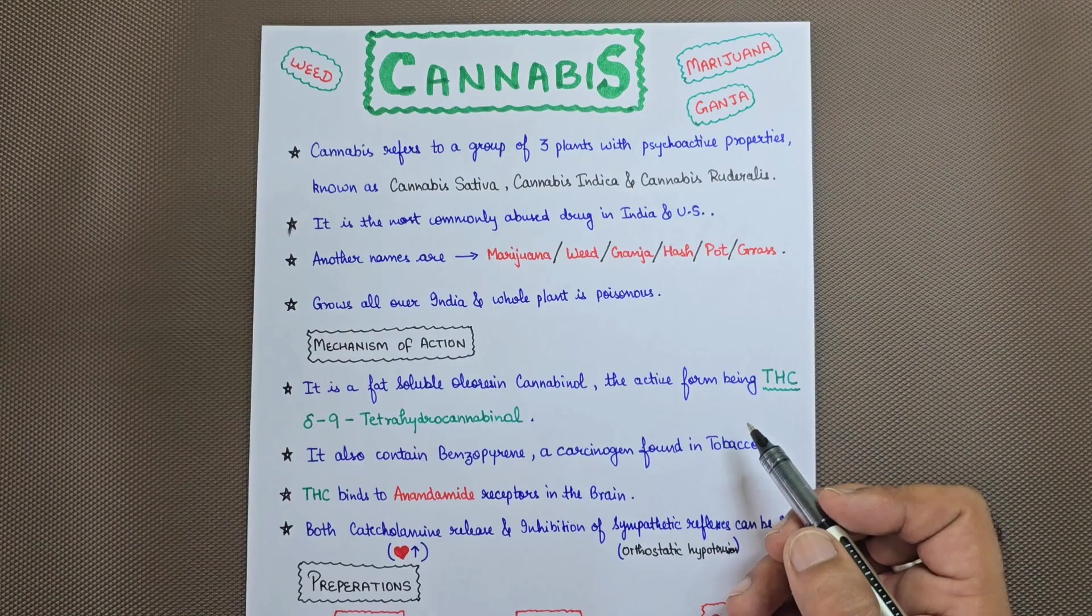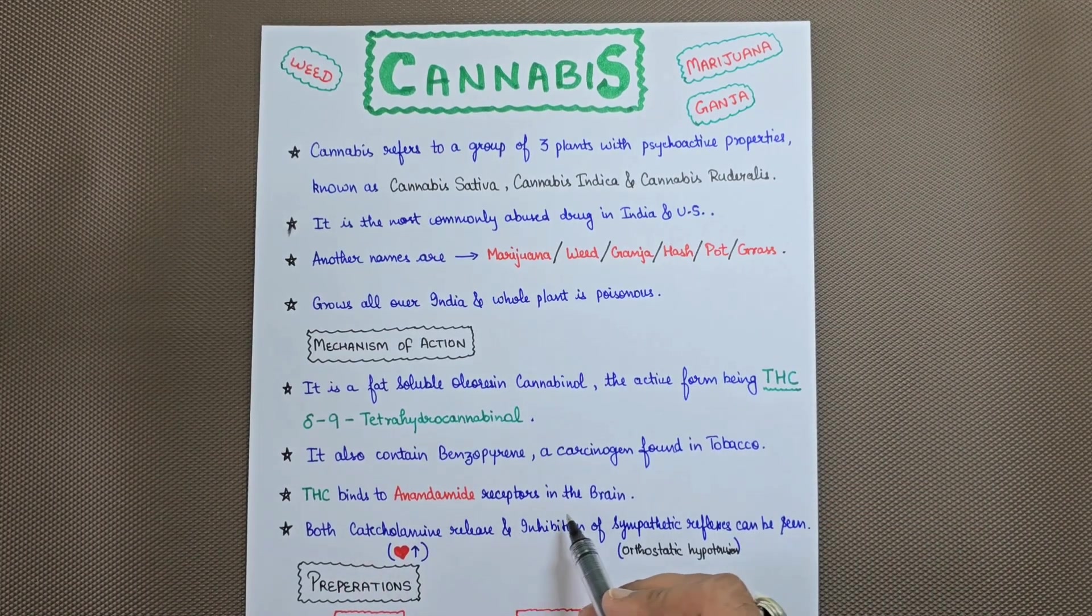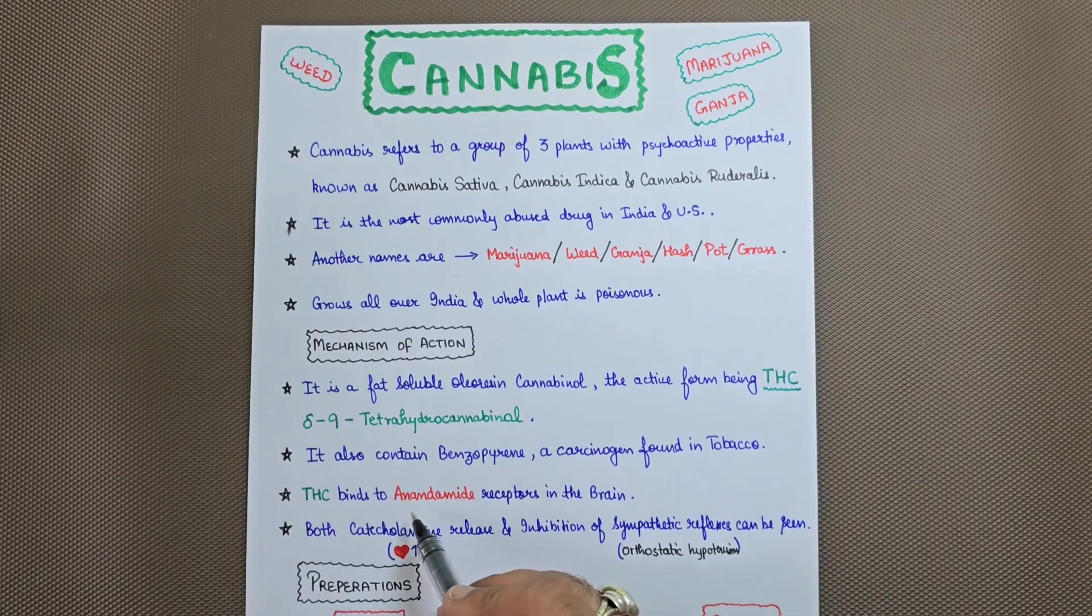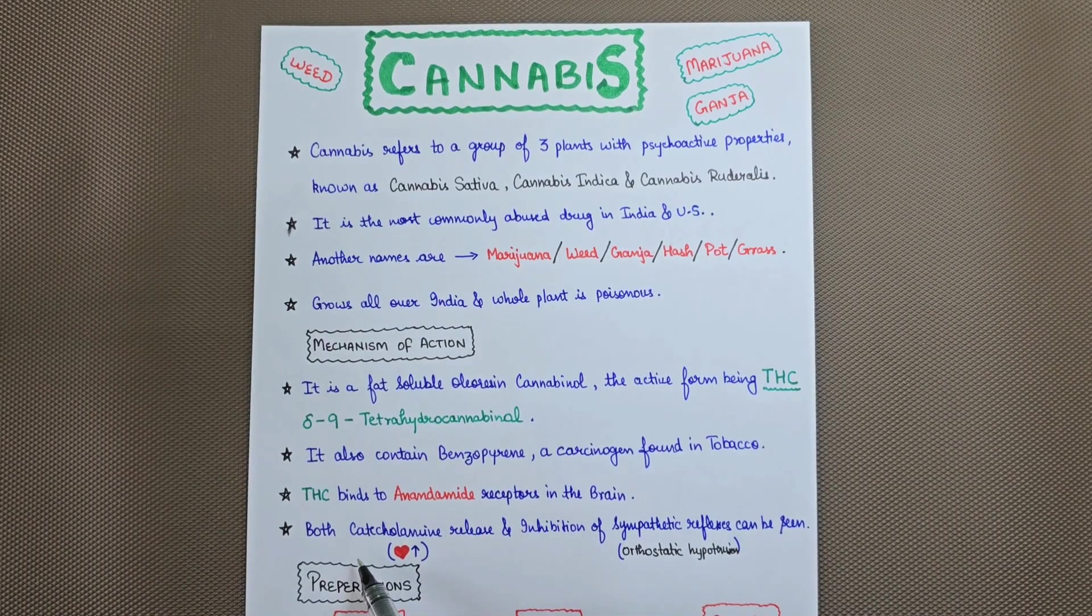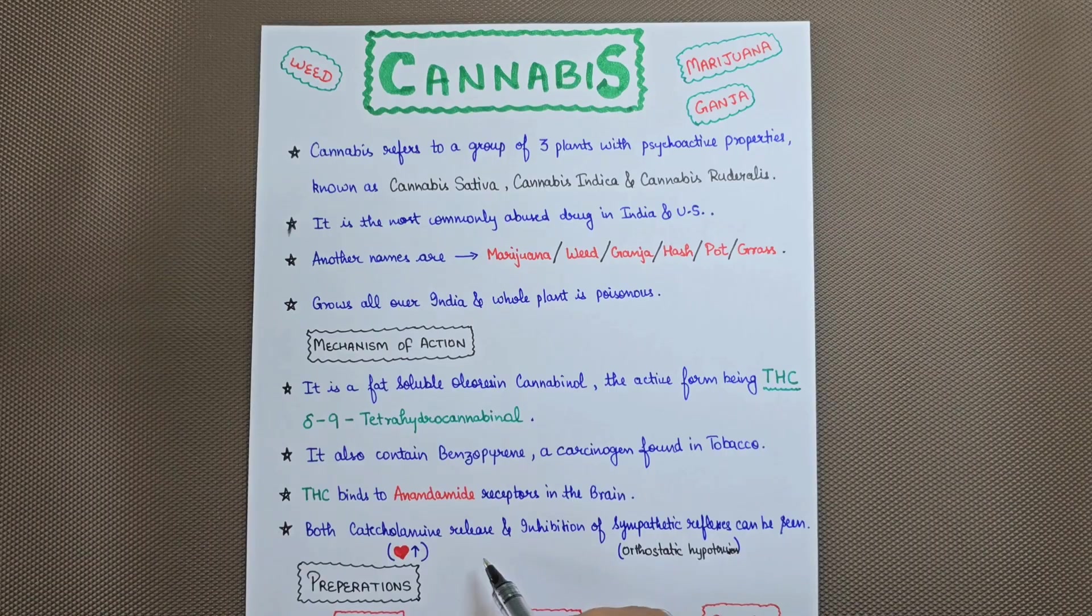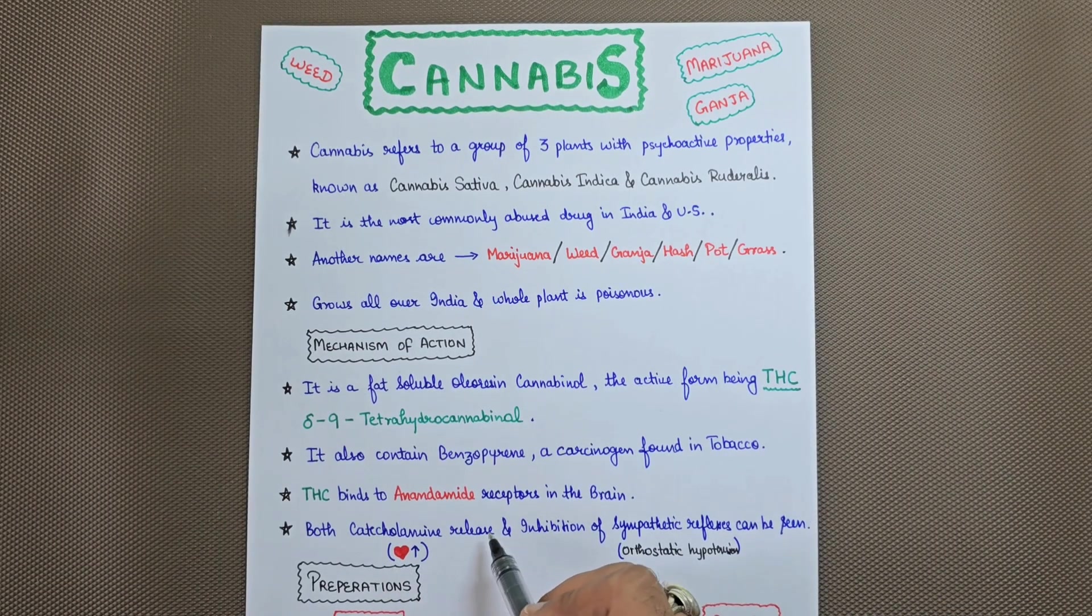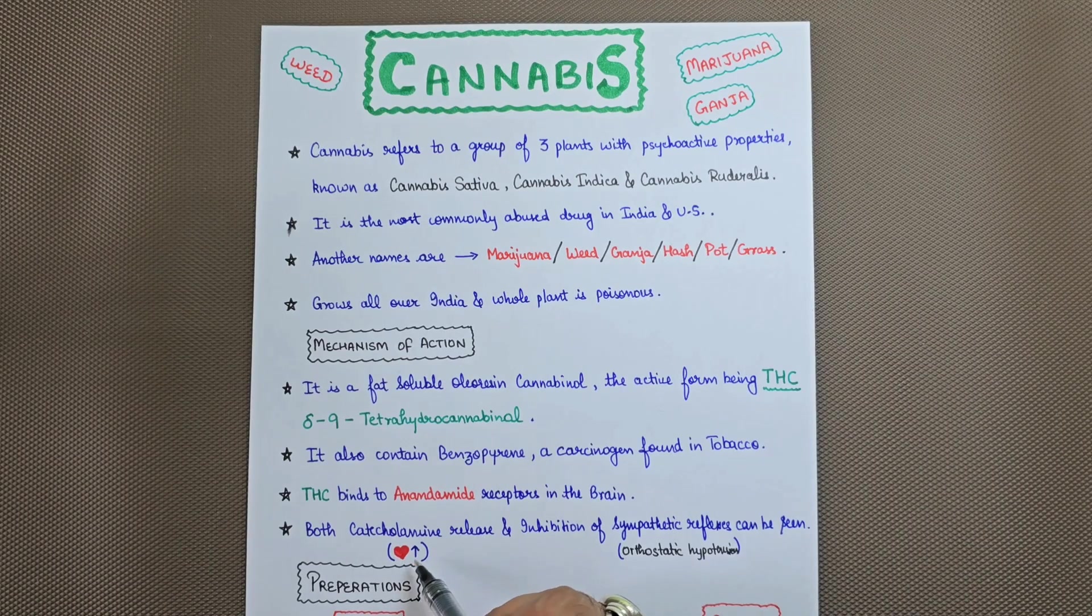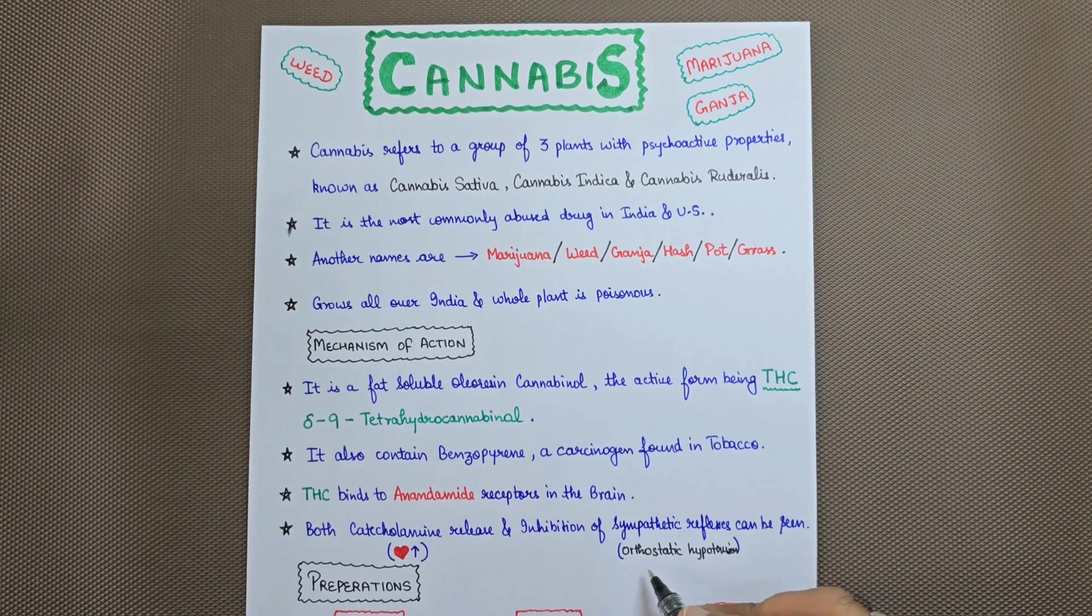What does this THC do? It binds to the anandamide receptors in the brain. When it binds to these receptors, both catecholamine release and inhibition of sympathetic reflexes can be seen. When catecholamines are released, there will be an increase in the heart rate. When sympathetic reflexes are inhibited, there will be orthostatic hypotension.